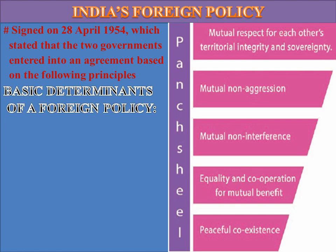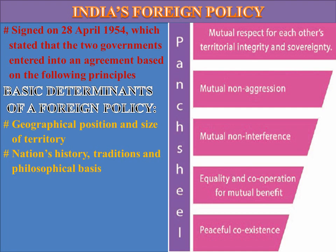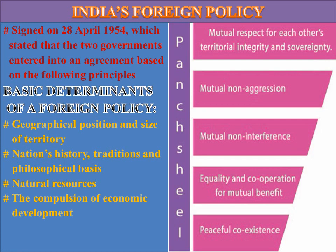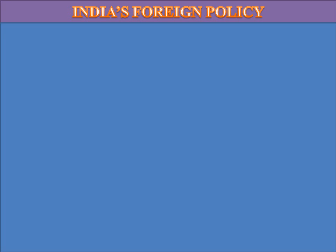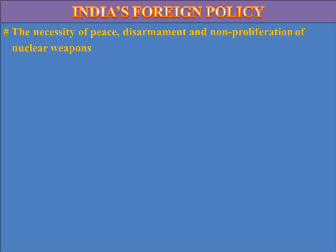Now we are going to learn about the basic determinants of foreign policy. These include political stability and structure of government. Next, the necessity of peace, disarmament, and non-proliferation of nuclear weapons. The next is military strength, and the last is international milieu.